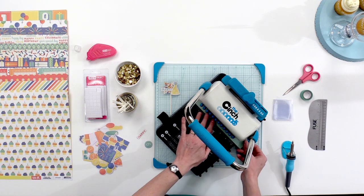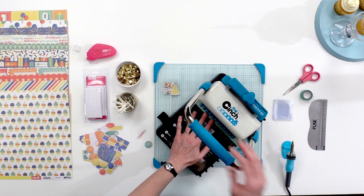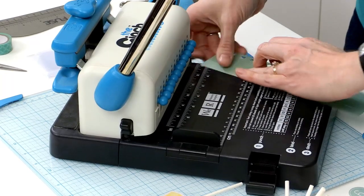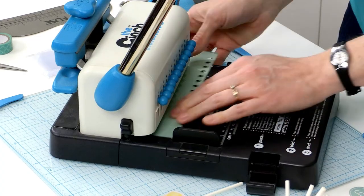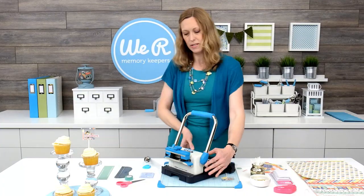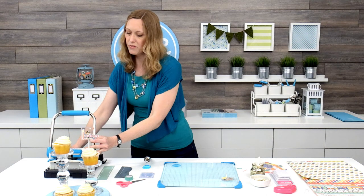So, then you're going to just put your scraps into the tool and push down. Super easy. Turn it around, do that again, and just keep punching the paper. You can use lots of different colors and styles of paper to get some nice colorful confetti.